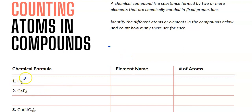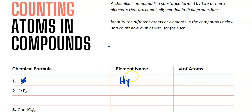So if we have a subscript — this is what we call a subscript, that two there — that two tells us how many atoms we have in the element preceding it. So in this case, we have the element hydrogen, and we are told that we have a total of two atoms.